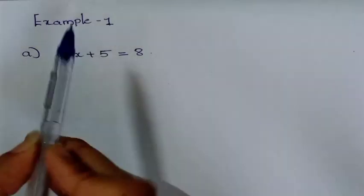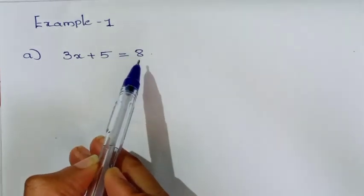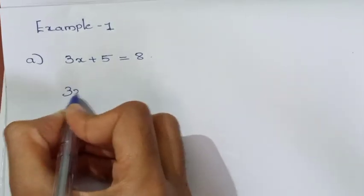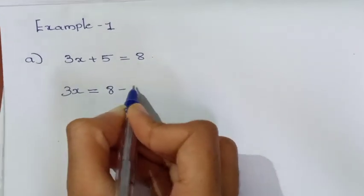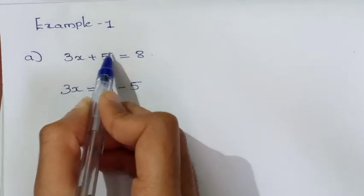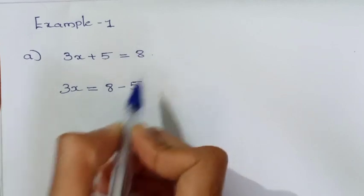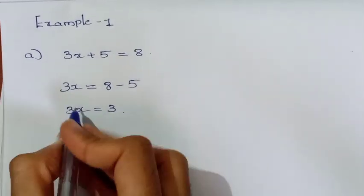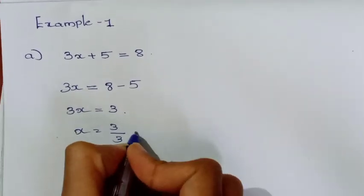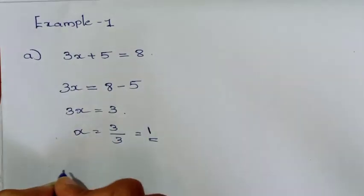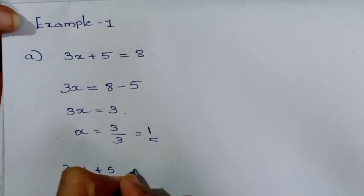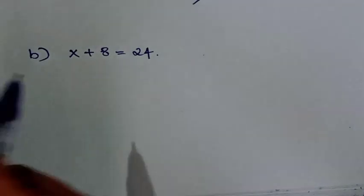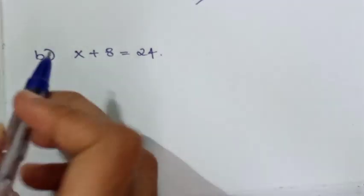Let's solve: x plus 5 equals 8. We move the 5 to the other side, so 3x equals 8 minus 5. That gives 3x equals 3, and dividing by 3, x equals 1.